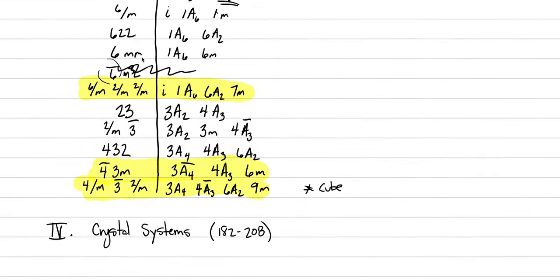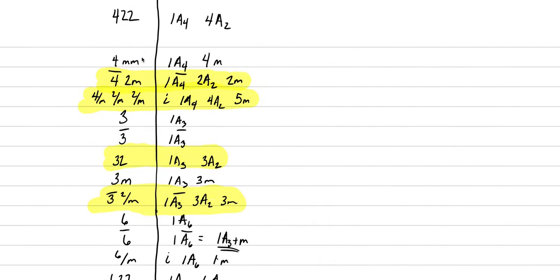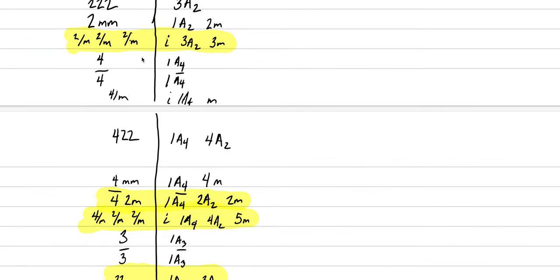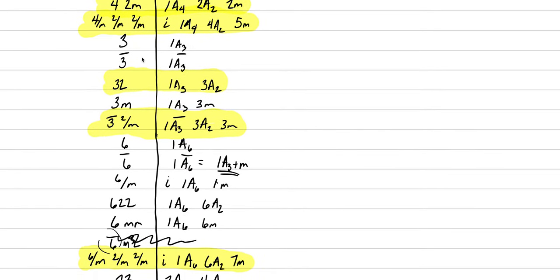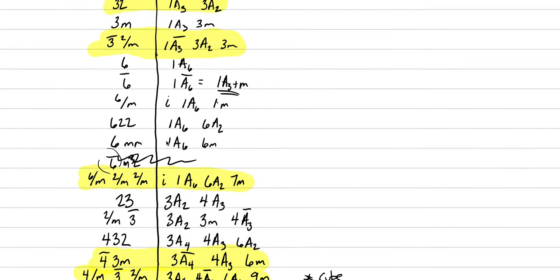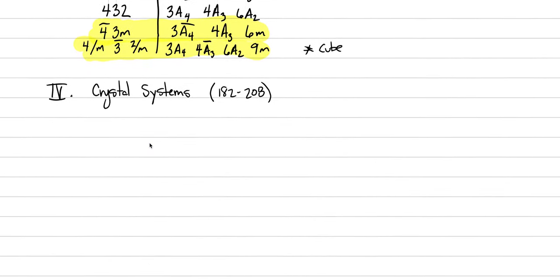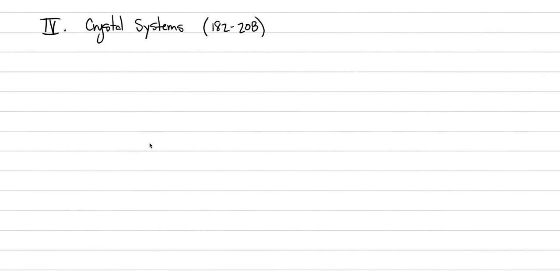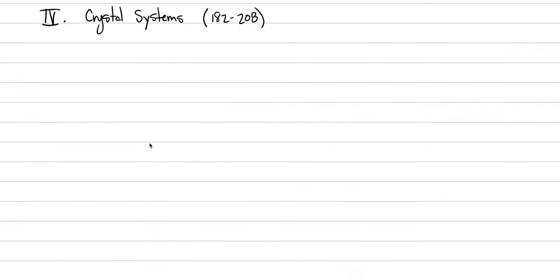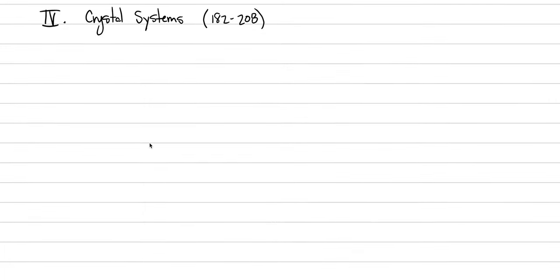Last class we walked through 32 different crystal classes within the framework of Hermann-Mogan notation, and we highlighted these top 10 that hold most of the minerals that occur on Earth. Today we're going to keep breaking that 10 down with the concept of crystal systems. As we go through this, our further organization requires that we work with crystallographic axes.